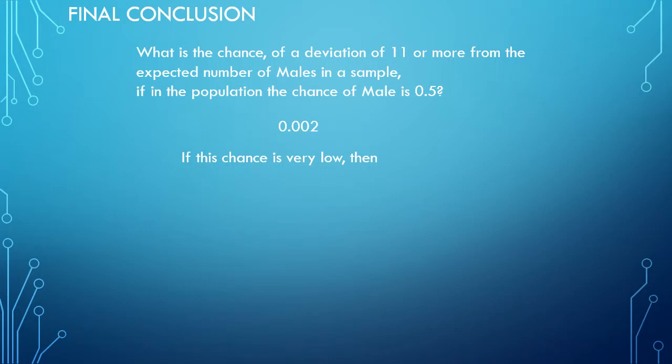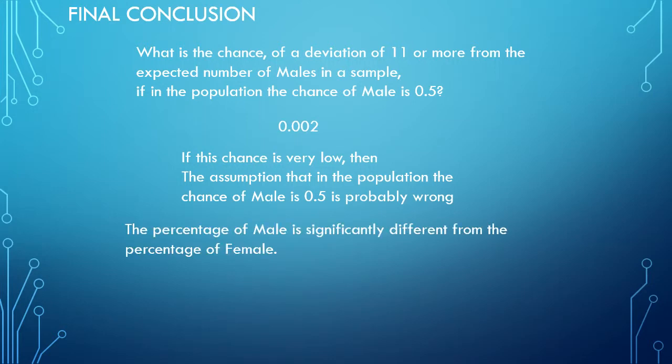So then the assumption that in the population the chance of male is 0.5 is probably wrong. So that's our conclusion now, and we can rephrase that into: the percentage of male is significantly different from the percentage of female.